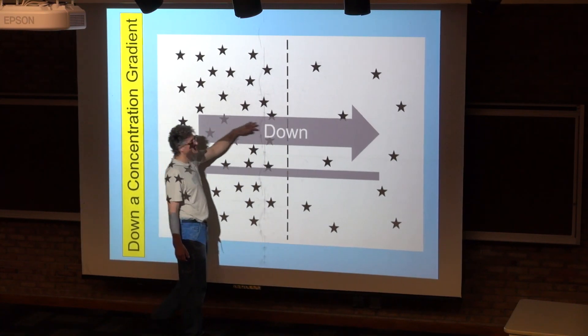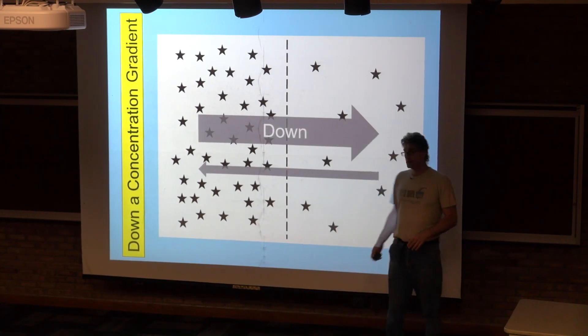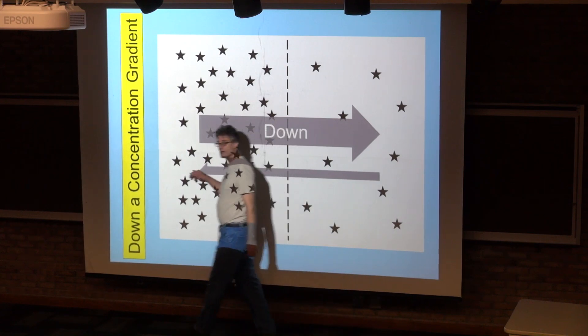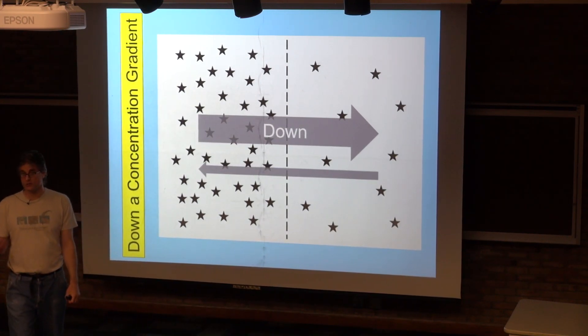Down a concentration gradient happens spontaneously. Up a concentration gradient doesn't happen spontaneously, it requires an input of energy to occur.